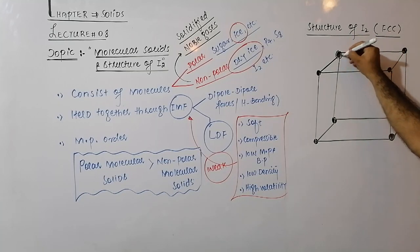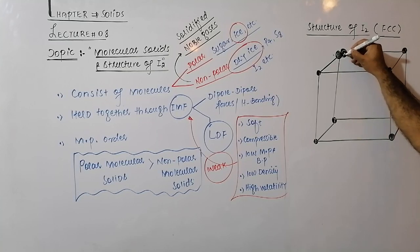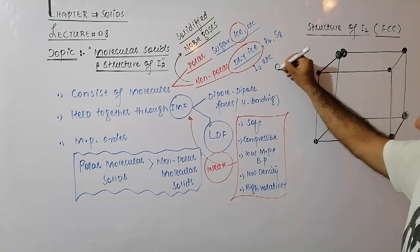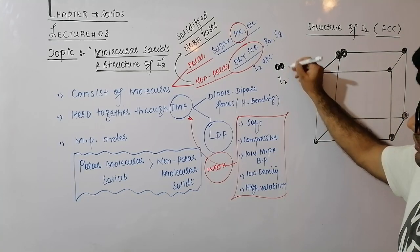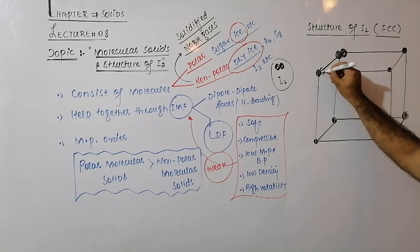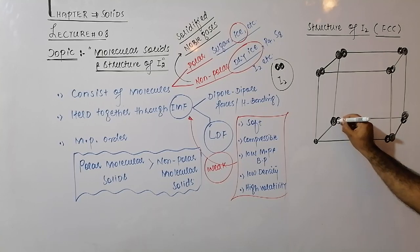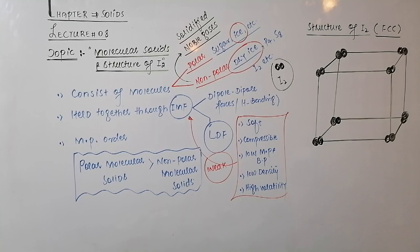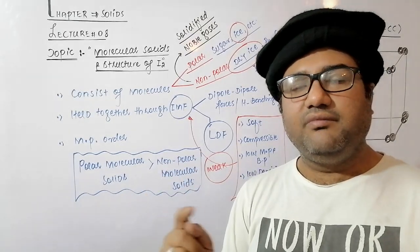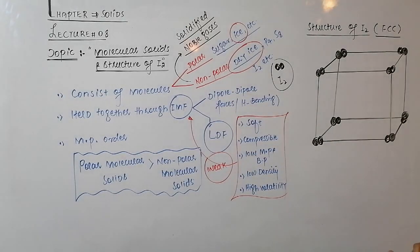Iodine is a molecular solid consisting of I2 molecules, so you will make two points at every corner to represent the iodine molecule — each dot represents an iodine atom. A face-centered cube has lattice points at the corners as well as at the center of each face. Now that the corner lattice points are placed, we add iodine molecules at the center of each face.